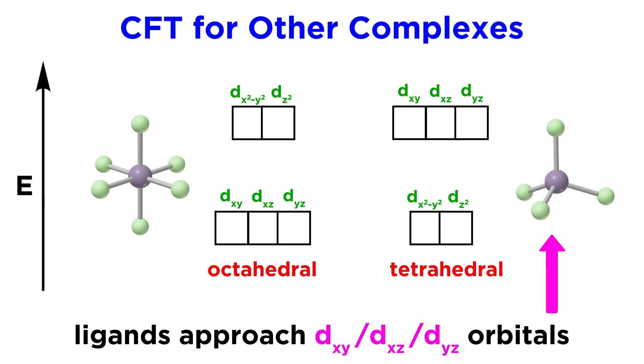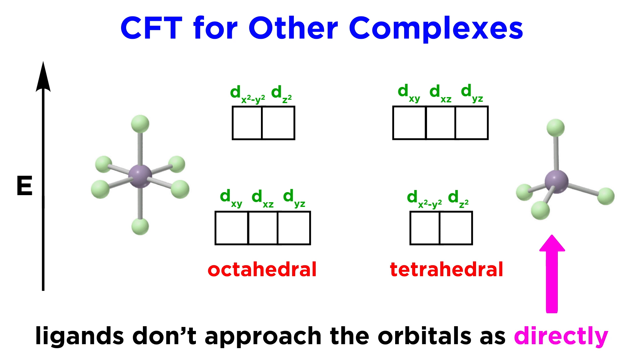Specifically, with this geometry, ligands more closely approach the d orbitals between the axes rather than the orbitals on the axes, so the higher energy orbitals are precisely the opposite ones as in the case of octahedral geometry. Also the ligands don't approach the orbitals as directly, so the energy splitting will be of a lesser magnitude.